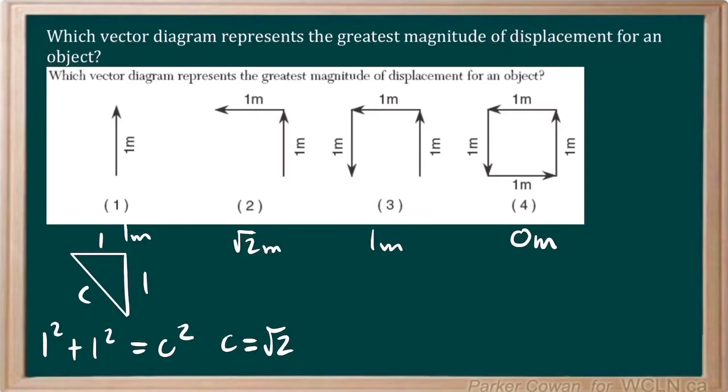So our largest is going to be number two here, because we're basically finding the hypotenuse of this, which is always going to be greater than its two sides. So, number two is the answer.